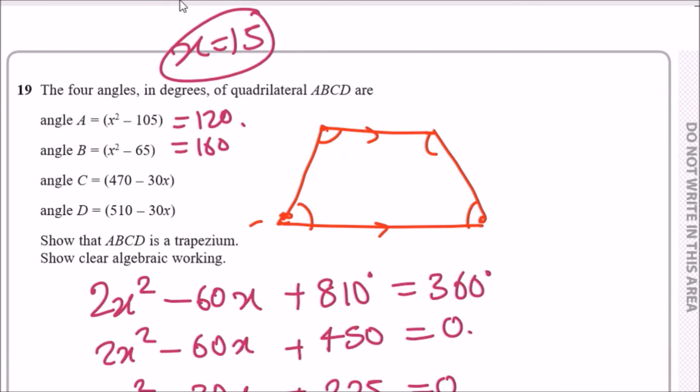The next angle will be 470 minus 30 times 15, which is 20. So I can see that these two, B and C, pair up.